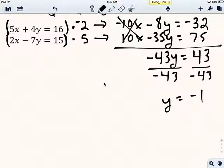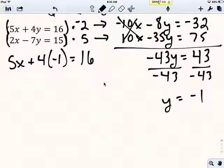Now we know that we're not done yet. We need to plug that negative 1 back into the original equation. I'm going to plug it into the top equation. So I'm going to go 5x plus 4 times negative 1 equals 16. Okay, so we have to multiply that 4 times negative 1. It's going to give me a negative 4.